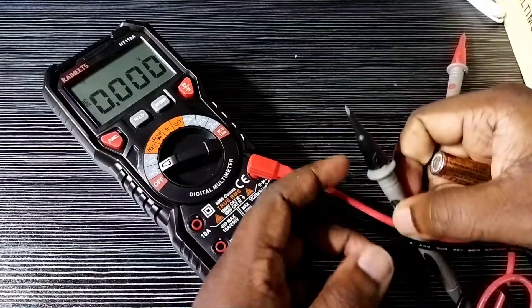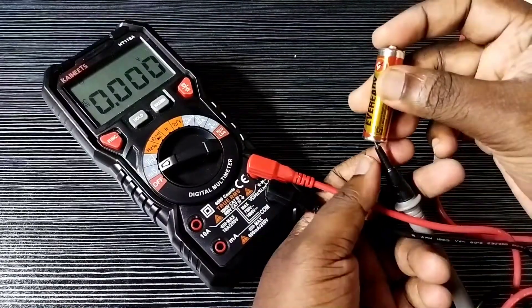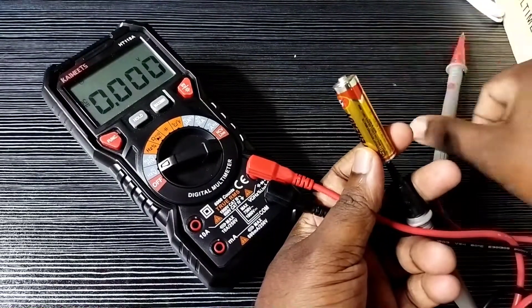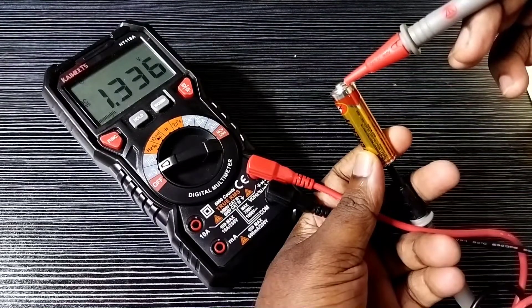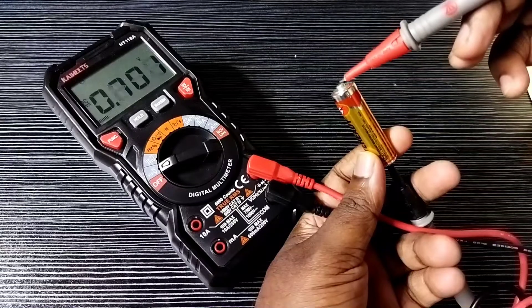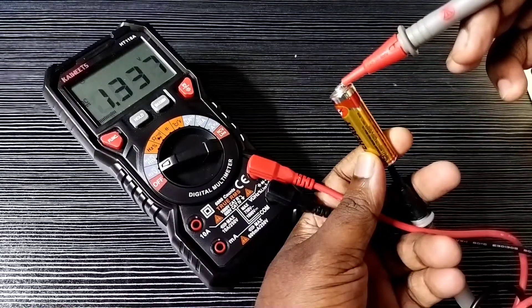Here I am going to test the voltage of this battery. Take the test cables, then touch the black cable to the negative and red cable to the positive. Now we can see the voltage here.